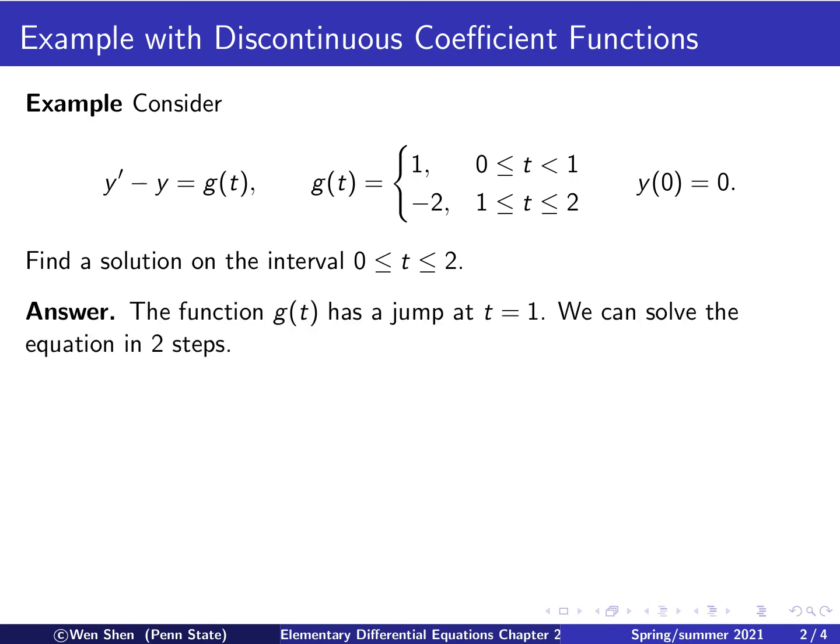Due to the reason that g is defined piecewise, we can split the solution steps into 2 on each of these intervals. First, we consider the interval t between 0 and 1. Here, the g equals 1 on the right-hand side.